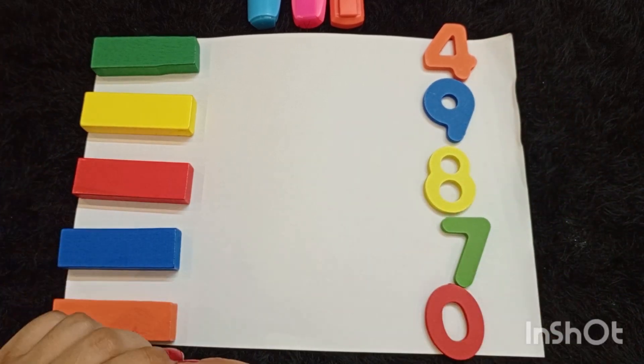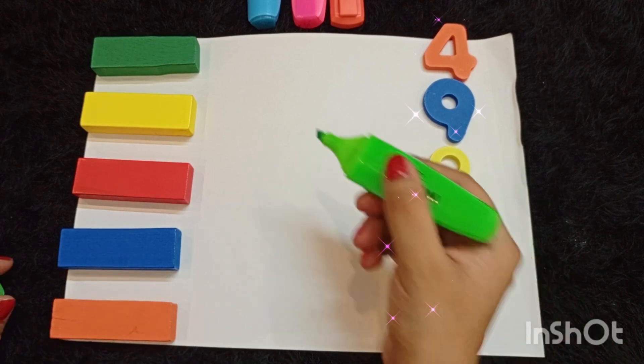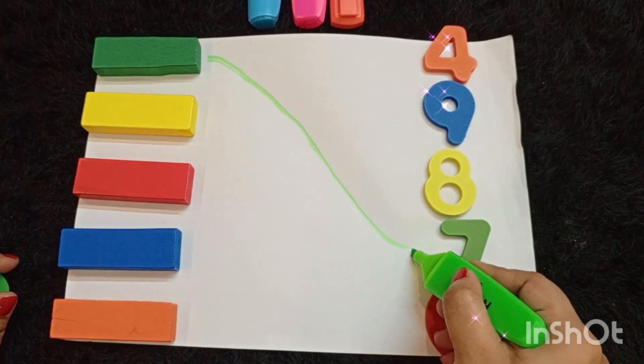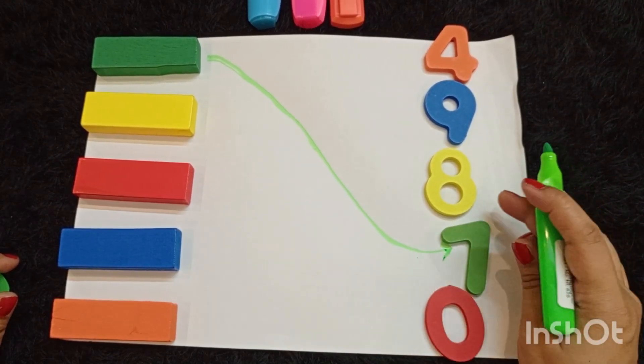The color of 7 is green, so let's match the green block with number 7. Yes, like this.